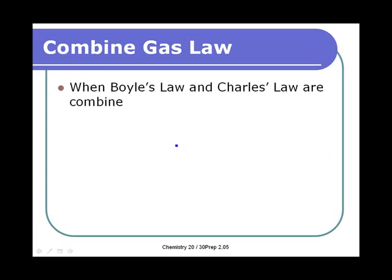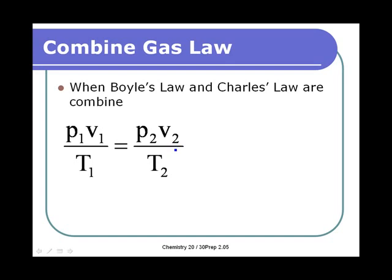The Combined Gas Law literally takes Boyle's Law and Charles' Law and combines them together, giving us this equation. We can now do calculations in which pressure, volume, and temperature are all allowed to change. With Boyle's Law, temperature had to remain constant. With Charles' Law, the pressure had to remain constant. Now with the Combined Gas Law, anything goes — we can change everything, which makes it more real-world.